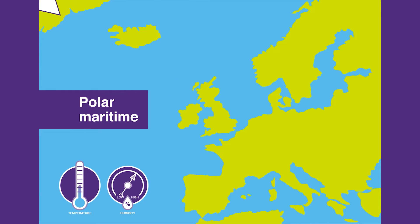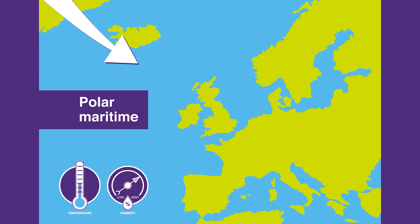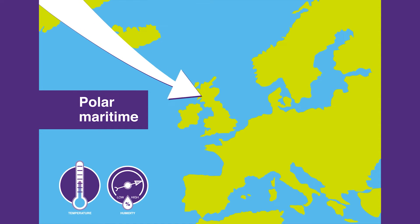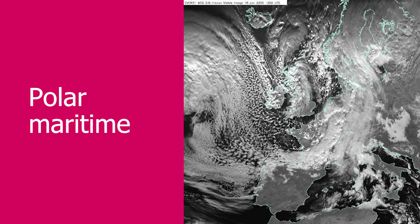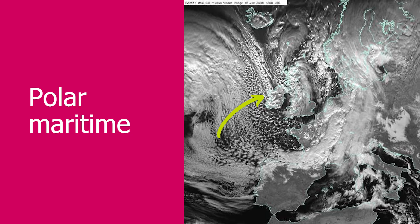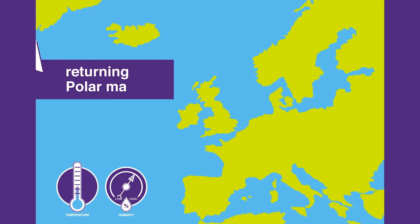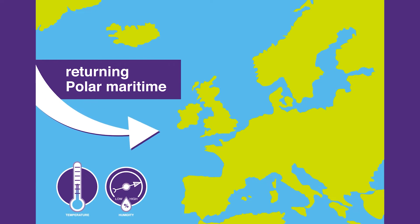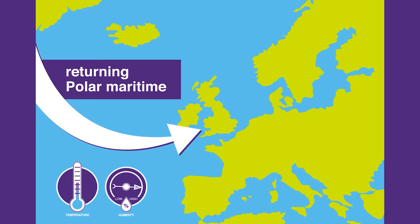Polar maritime air, our dominant air mass, brings cloud and rain predominantly to the west of the UK and relatively dry air to the east. This satellite image is typical of polar maritime air — you can see the puffy cumulus clouds over the ocean and the belt of cloud over the western side of the country. Returning polar maritime air is air polar in origin which swings around to hit the UK from the west or slightly south of west, but if you follow its path back you'd see it was polar in origin.